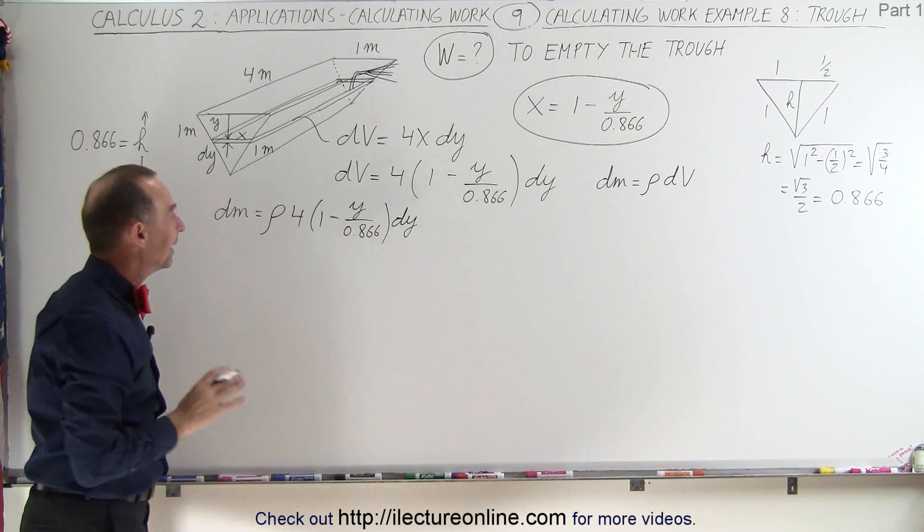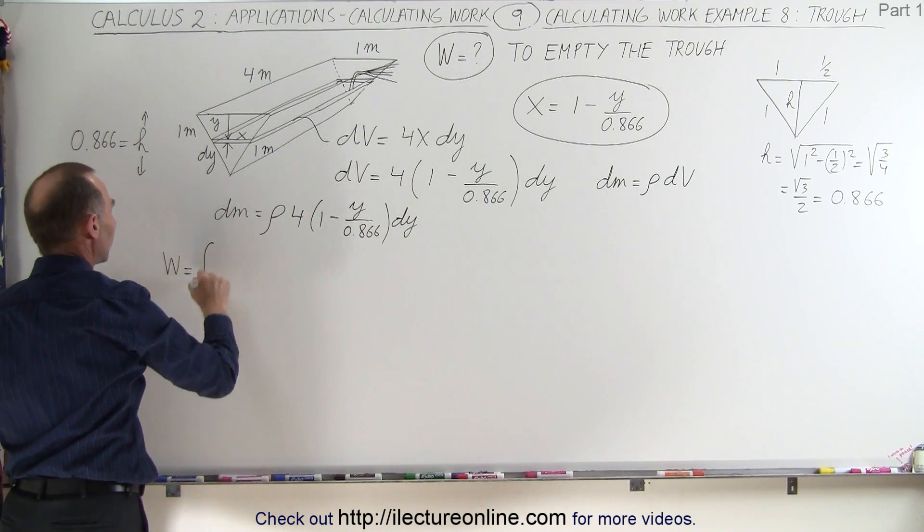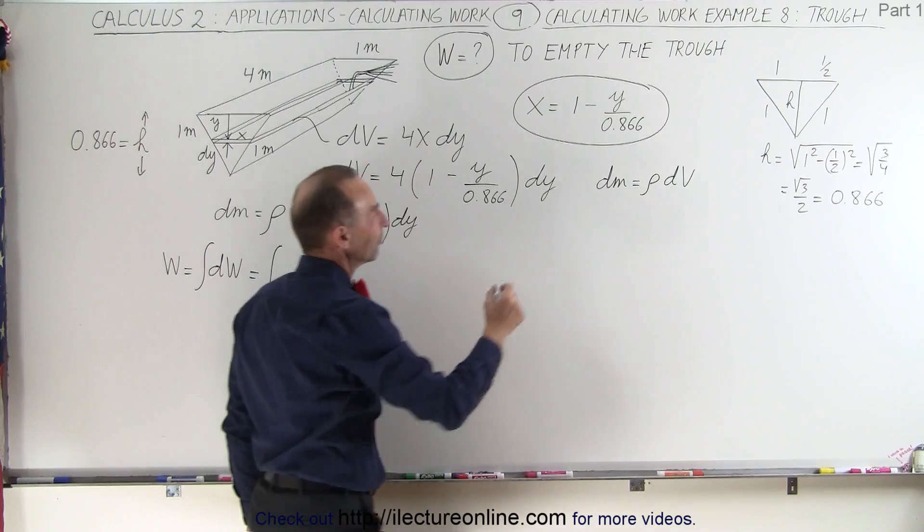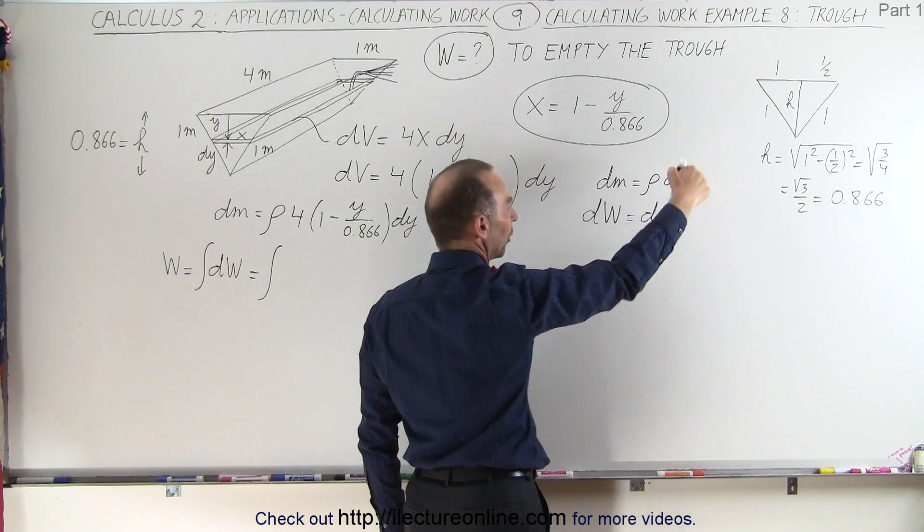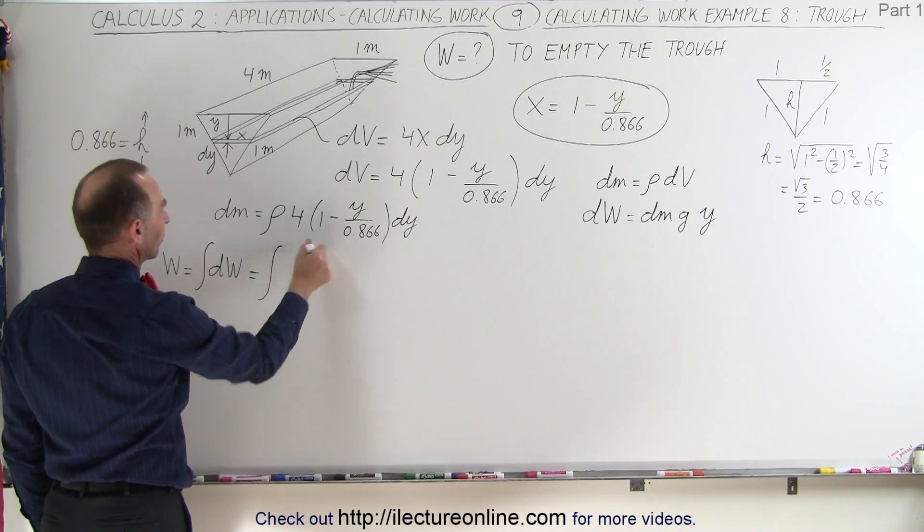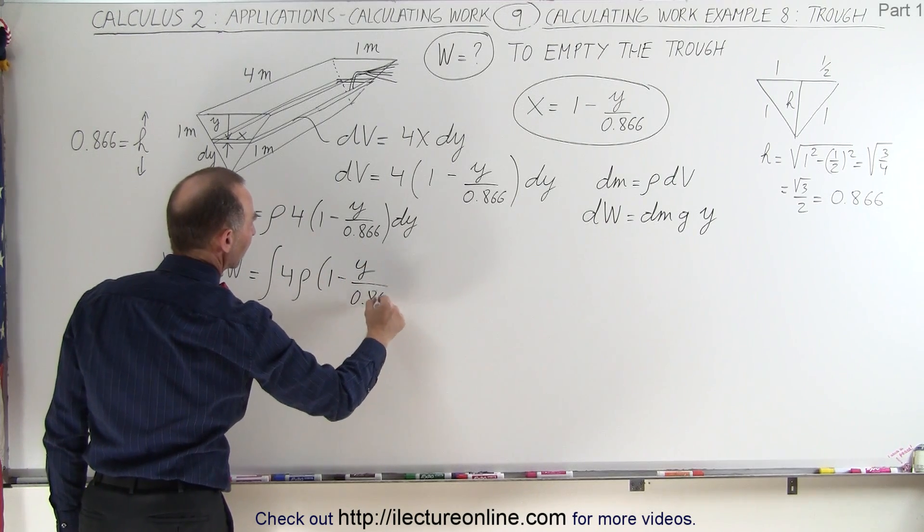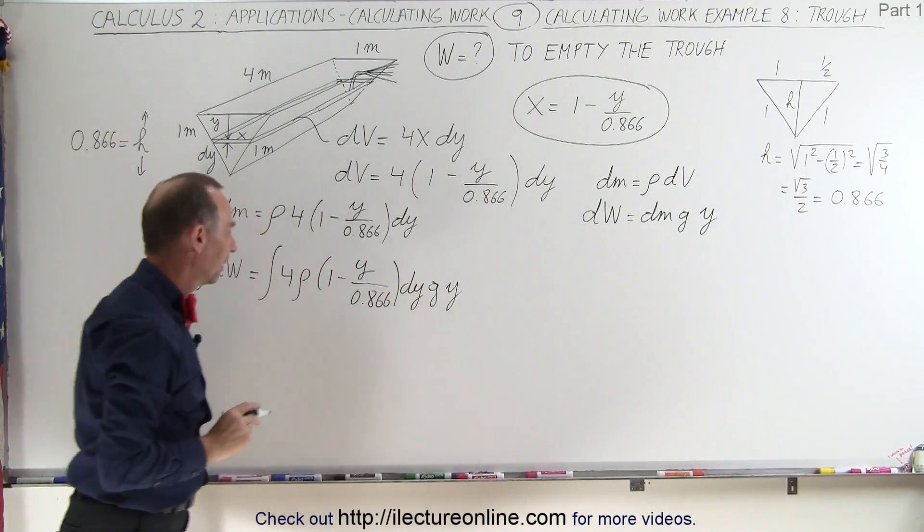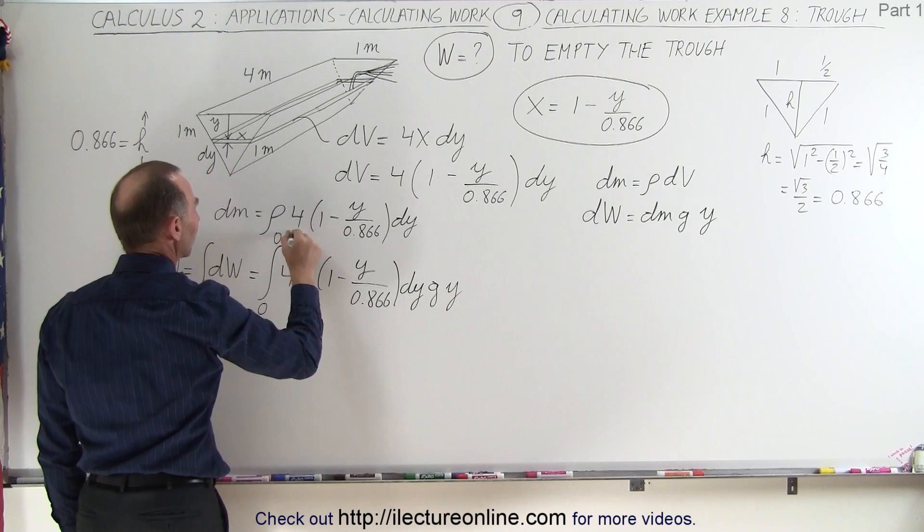Now we're ready to go ahead and integrate this because we can say that the work done to move all the water out of the trough is going to be equal to the sum of all the small dWs. Now dW can be defined as being equal to the small amount of mass that we're moving out of the trough times g times the height y. So our dm is defined right here, so it'll be 4 times the density times 1 minus y over 0.866 times dy times g times y. Now the limits are going to be from y equals 0 at the top to y equals 0.866 at the bottom.